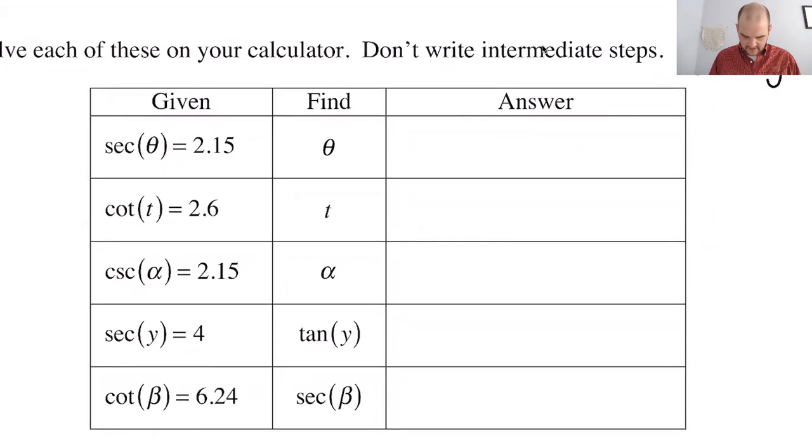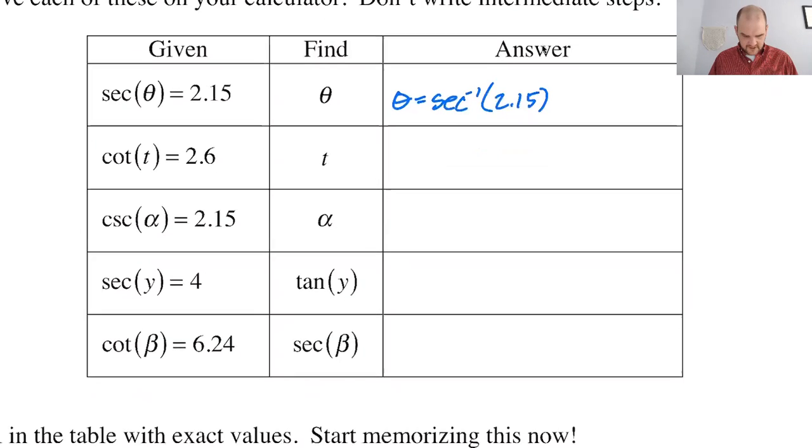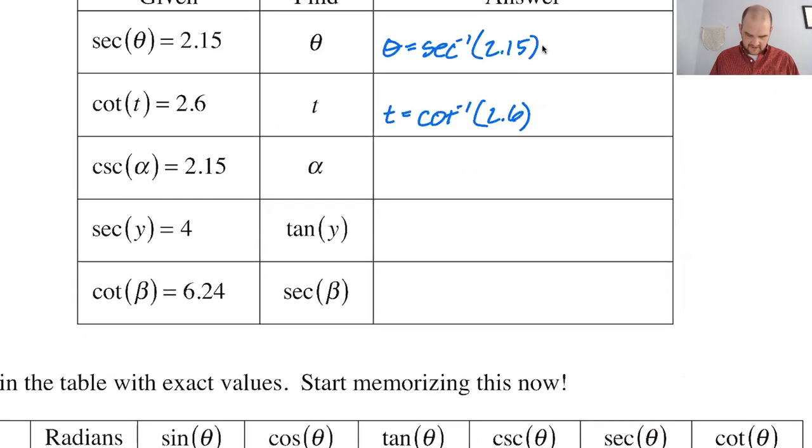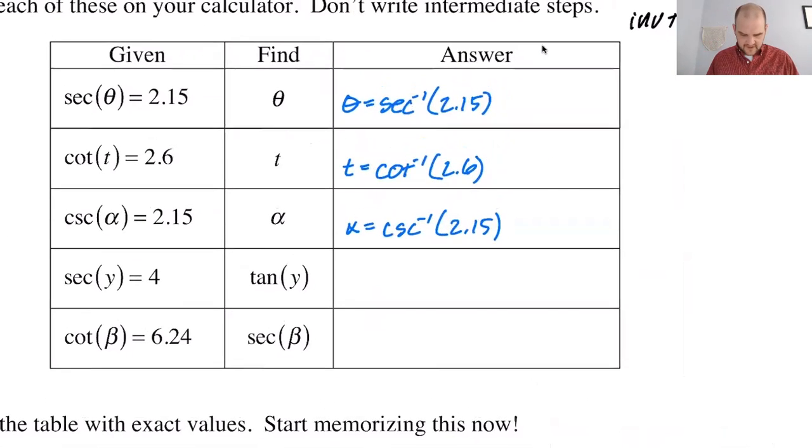But there's nothing interesting about the first three, so I'm going to write my intermediate steps in blue. So I'm just going to do the, I'm going to say that theta is the inverse secant of 2.15. And then whatever the calculator says here, T is going to be the inverse cotangent of 2.6. Cosecant, so alpha is going to be the inverse cosecant of 2.15. Okay, so I'm also, when I'm on the calculator, I'm going to do these a little differently and see if what I think is happening is happening.